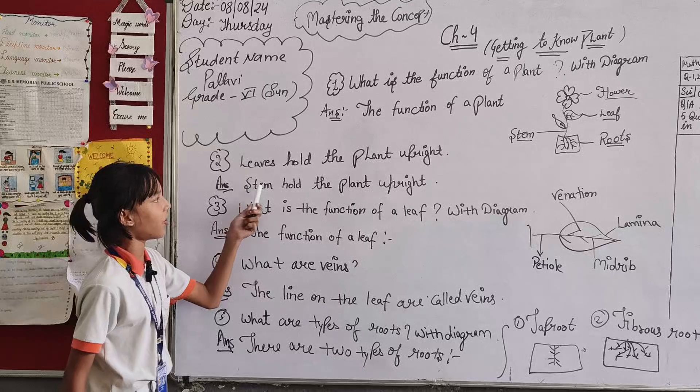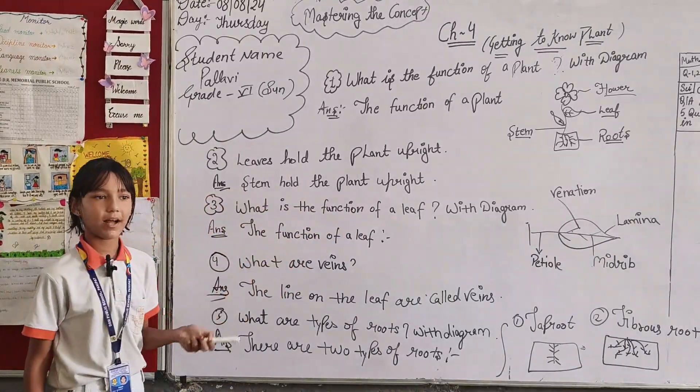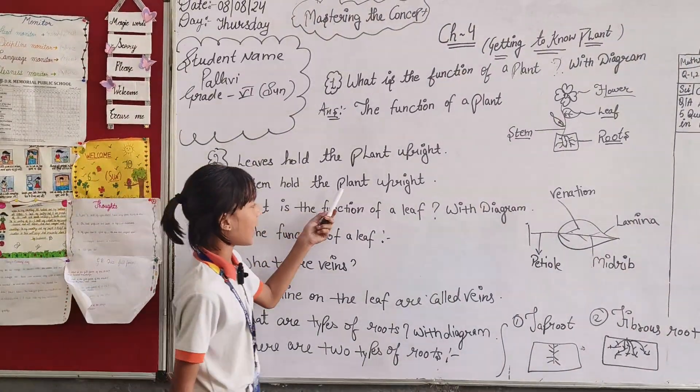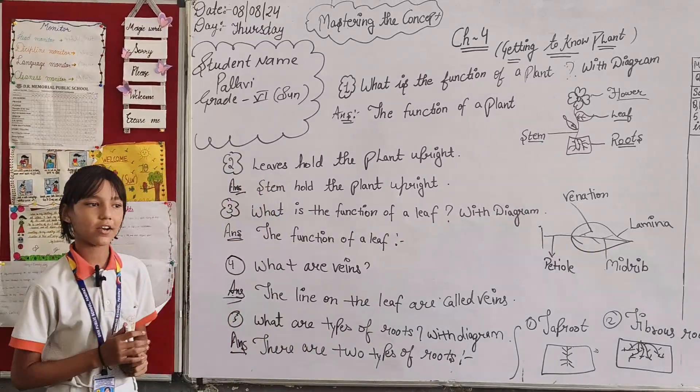Second question, leaves hold the plant upright. Leaf is making the whole plant, it's wrong. Stem holds the plant upright. Stem is making the whole plant.